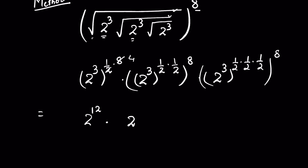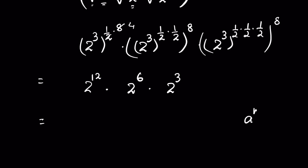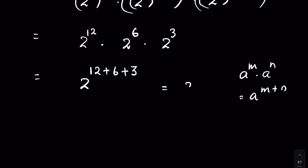So we can write it as 2 raised to the power 12, times 2 raised to the power 6, times 2 raised to the power 3 — the 8s cancel. Using the identity aᵐ times aⁿ equals a raised to the power m plus n, this becomes 2 raised to the power 12 plus 6 plus 3, which equals 2 raised to the power 21.